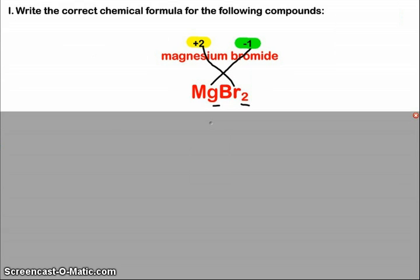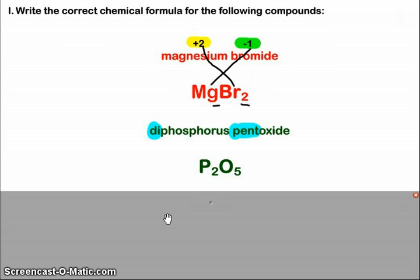Looking at the next one, this is a molecular compound. And when we see those prefixes - di, pent, or others, tri, tetra, hexa - we just write the compound formula based on those prefixes. So diphosphorus means that we have two phosphorus. Pentoxide, five oxygens.